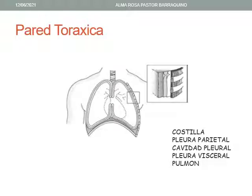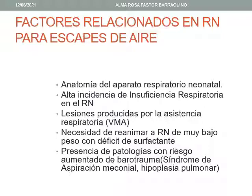En esta gráfica se aprecia la pared torácica en un corte que muestra desde afuera hacia adentro la costilla, la pleura parietal, la cavidad pleural, la pleura visceral y el pulmón. Los factores relacionados con escape de aire incluyen la anatomía del aparato respiratorio neonatal, la alta incidencia de insuficiencia respiratoria en el recién nacido, lesiones producidas por la asistencia respiratoria como la ventilación mecánica o reanimación manual, y la presencia de patologías con riesgo aumentado como el síndrome de aspiración meconial y la hipoplasia pulmonar.